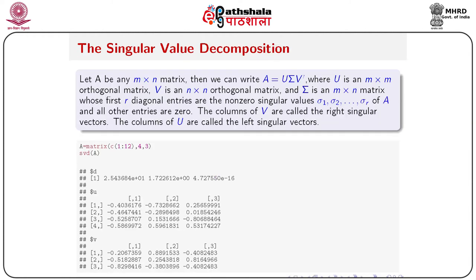Next we'll see singular value decomposition (SVD). Let A be an m by n matrix; we can write A equals U Sigma V-inverse, where U is an m by m orthogonal matrix, V is an n by n orthogonal matrix, and Sigma is an m by n matrix whose first r diagonal elements are non-zero singular values sigma_1, sigma_2, ..., sigma_r of A, and all other entries are zero.